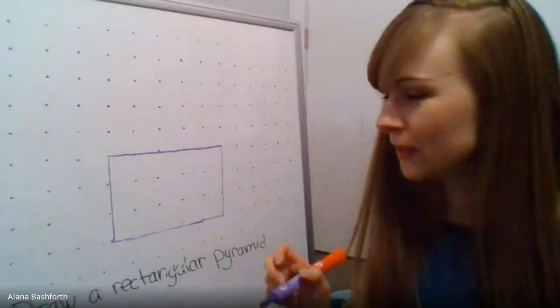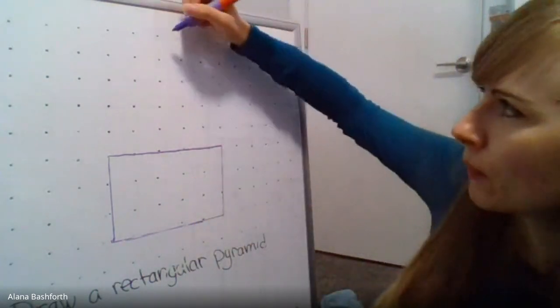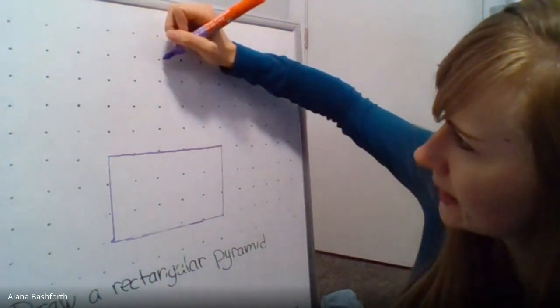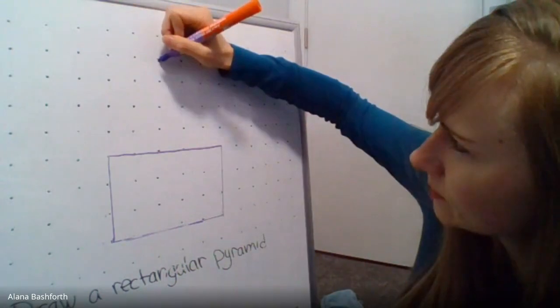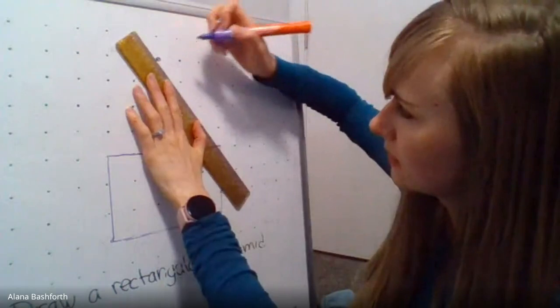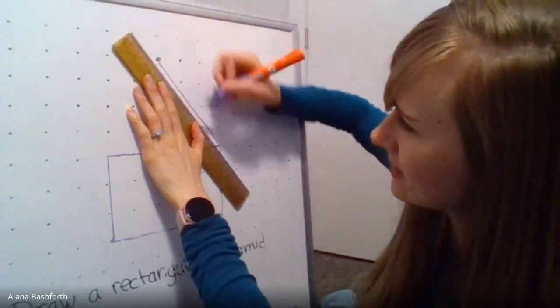With a pyramid, since we only have one base for pyramids, you just pick a point above somewhere. I'm going to pick right here, and then you connect all corners to this point through the apex, as you learned in the last lesson.